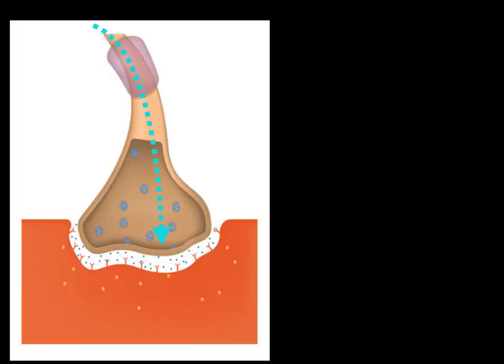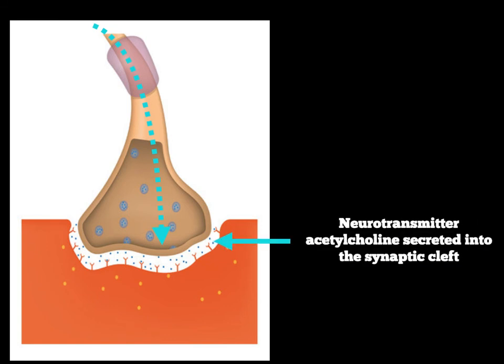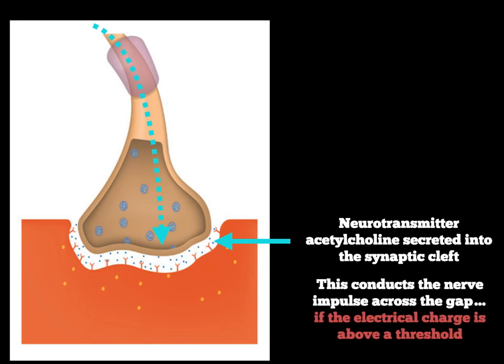Once the action potential — the electrical charge — reaches the end of the motor neuron and the gap, you can now see the gap on the screen between the muscle fibre in orange and where our arrow is. Acetylcholine is then secreted into that gap, and that helps the electrical charge go into the muscle fibre.